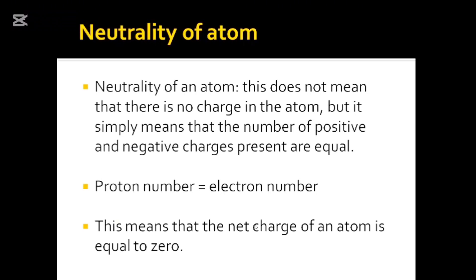Neutrality of an atom — most times people misunderstand this. I have seen in exams where students are asked what they understand by neutrality of an atom, and they say it means the atom has no charges. That's not correct. There are charges in atoms, but two charges of influence that can make it deviate in an electric field are the proton and electron. The neutron is neutral, so it has no influence in an electric field.